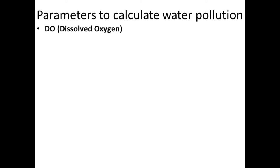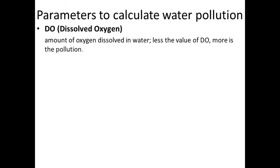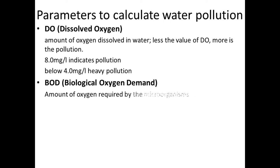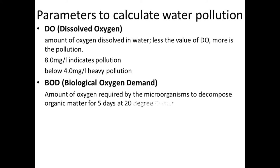This slide shows the commonly used parameters to check the quality of water. DO — dissolved oxygen — is the amount of oxygen dissolved in water. Less the value of DO, more the water is polluted. 8 mg per litre indicates pollution, and below 4.0 mg per litre means heavy pollution. BOD — biological oxygen demand — is the amount of oxygen required by microorganisms to decompose organic matter for 5 days at 20 degrees Celsius. High the value of BOD, high is the level of water pollution.